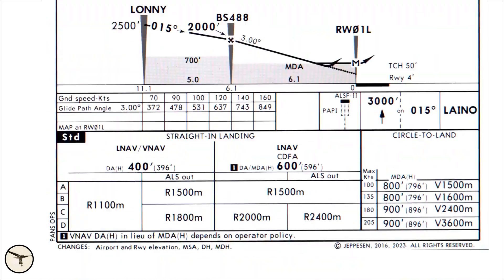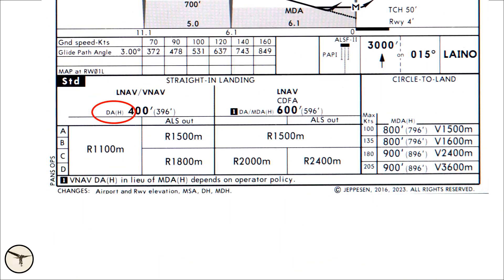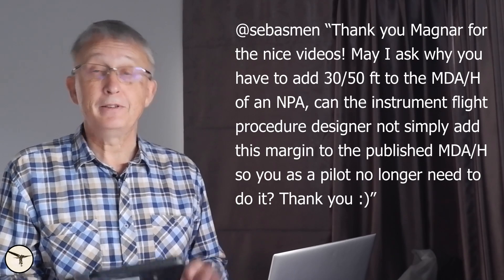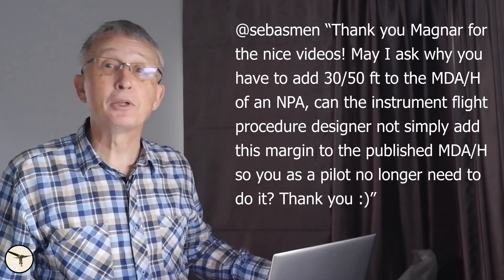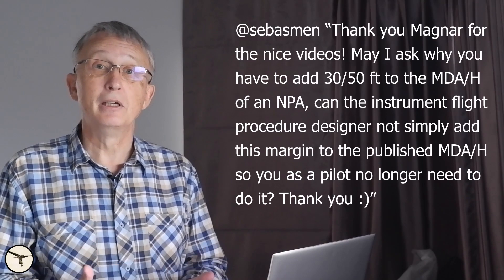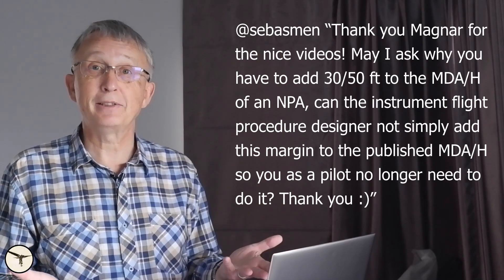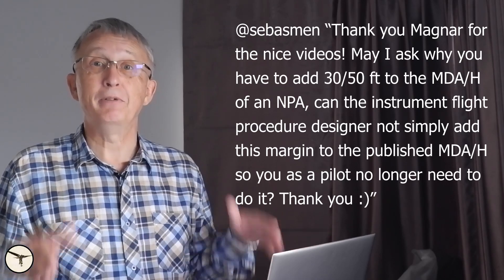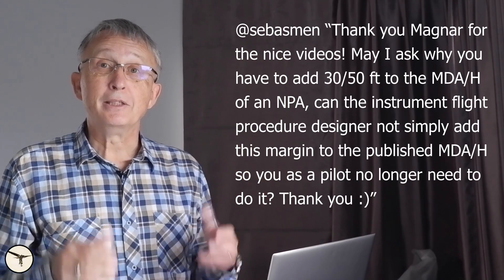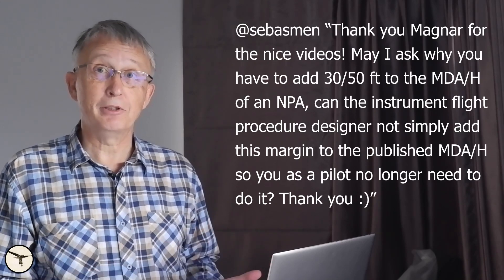When you look at the approach chart, it shows decision altitude 400. When you see decision altitude, it means you do not have to add anything. For an alternative approach, it's written 600 feet, but it shows DH or MDA — so there's an option, and it's written in the comments. DH or MDA depends on operator policy. It's up to the operator to decide whether to add 30 or 50 feet to the approach. Some companies flying ATRs add 30 feet, which is normal according to EASA, but some companies add 50 feet because they have a mixed fleet with larger jets who need 50 feet. So they keep it simple and everyone adds 50 feet. Of course, you also have to follow the regulations in your country, as they can vary.